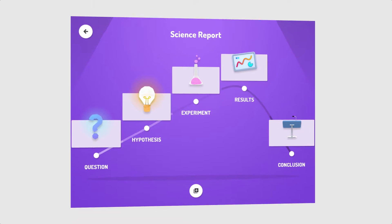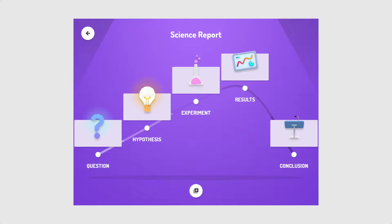The science report also comes with five parts, but in this case it comes with a question, hypothesis, experiment, results, and a conclusion.